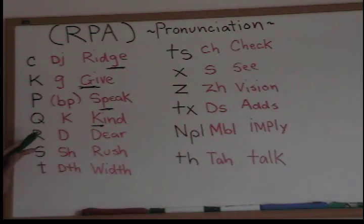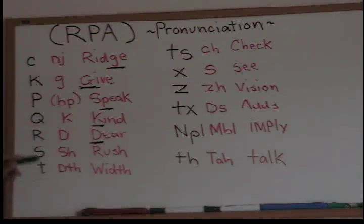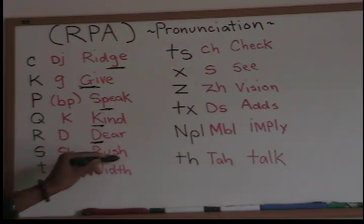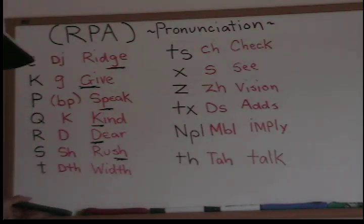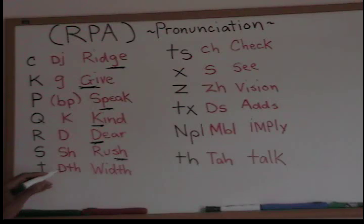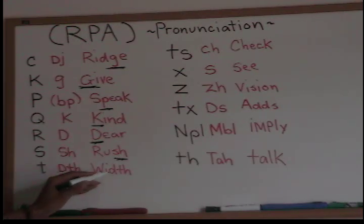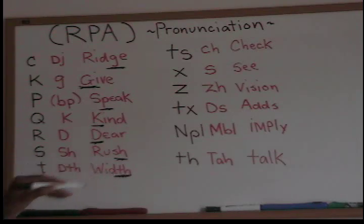R is a D sound, as in 'deer.' S makes a SH sound, as in 'rush.' The T makes a TH sound — like the TH in 'with.' It's a voiced TH sound: 'with,' 'with,' TH.